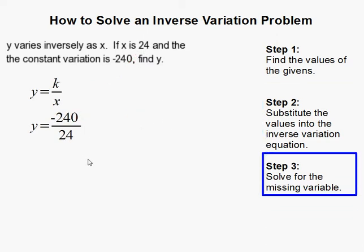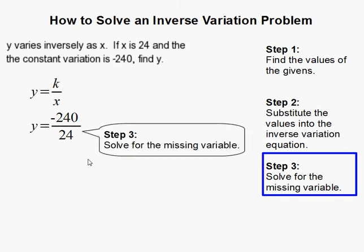Lastly, we simply need to solve for the y. In this case, negative 240 over 24 is equal to negative 10, and that completes our problem.